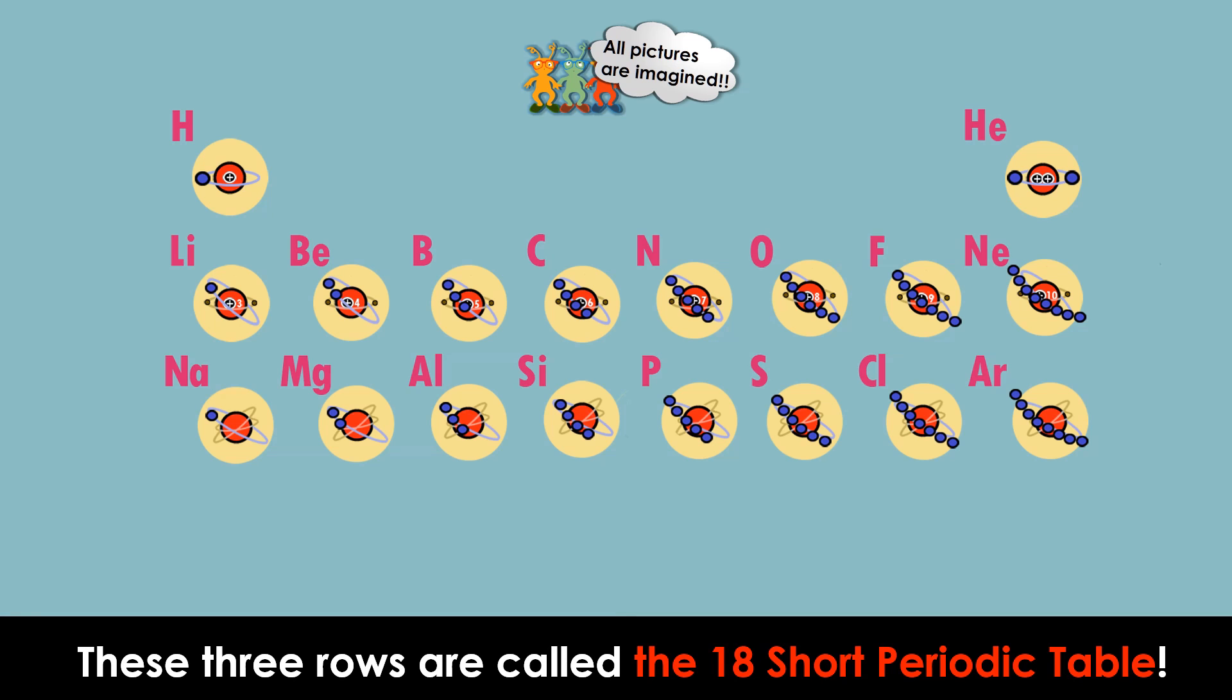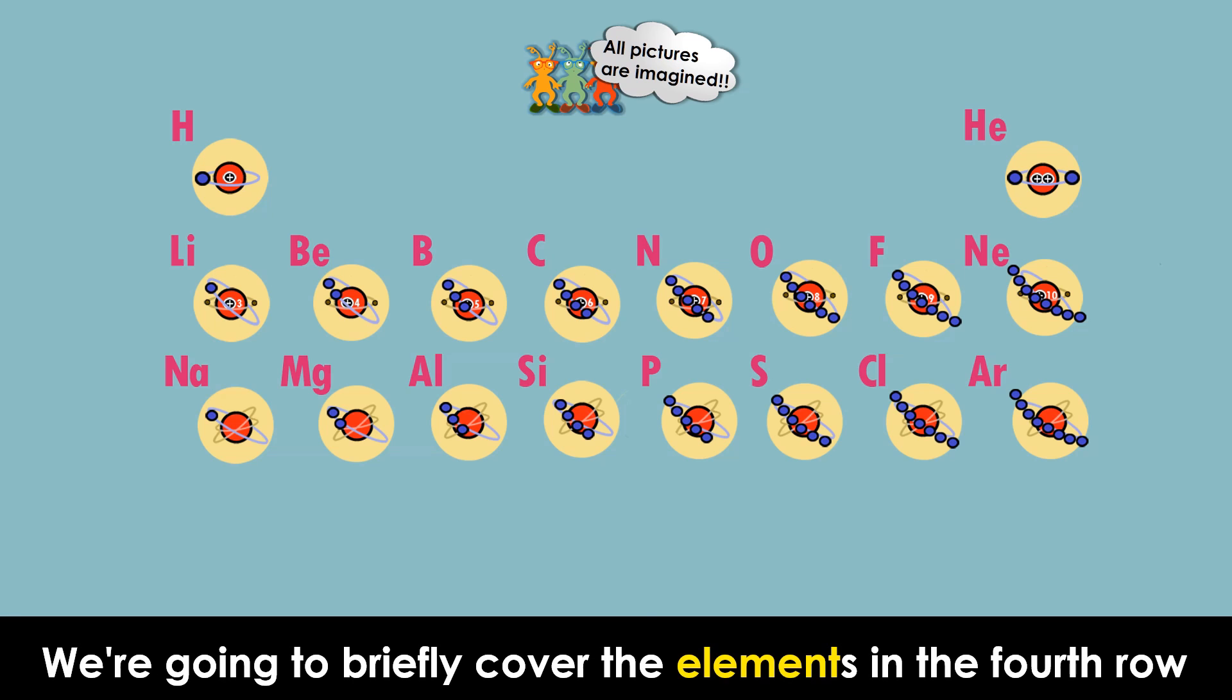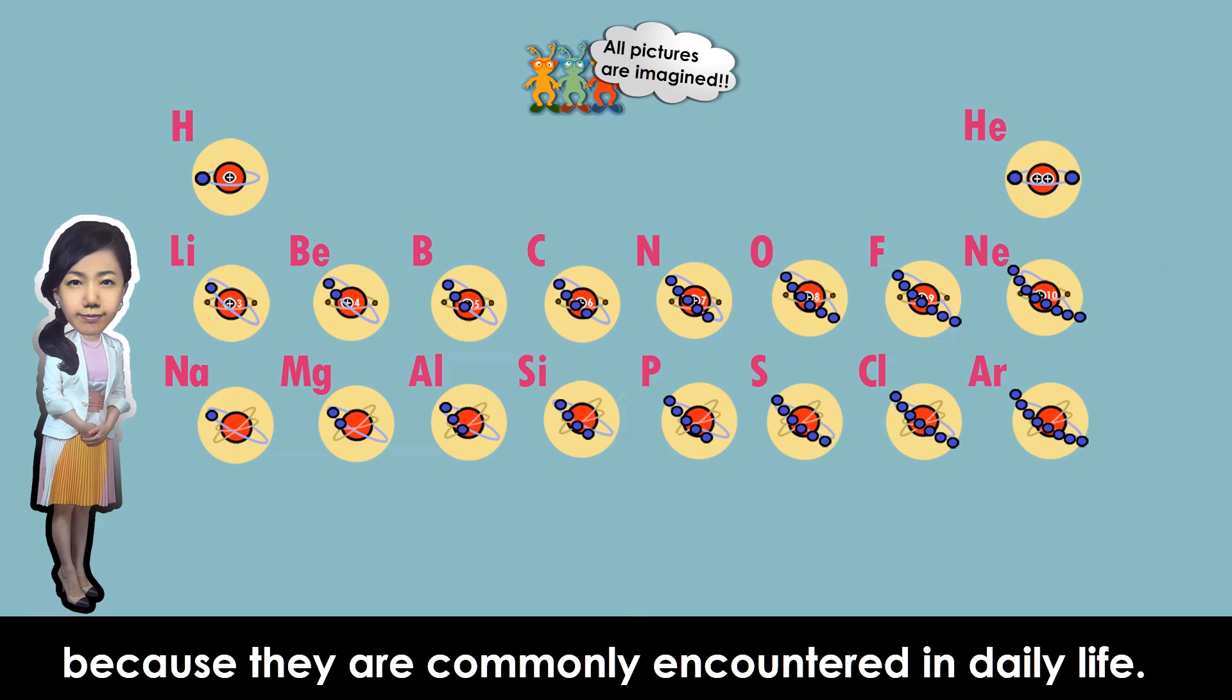These three rows are called the short periodic table. They are the main elements. We're going to briefly cover the elements in the fourth row because they are commonly encountered in daily life.